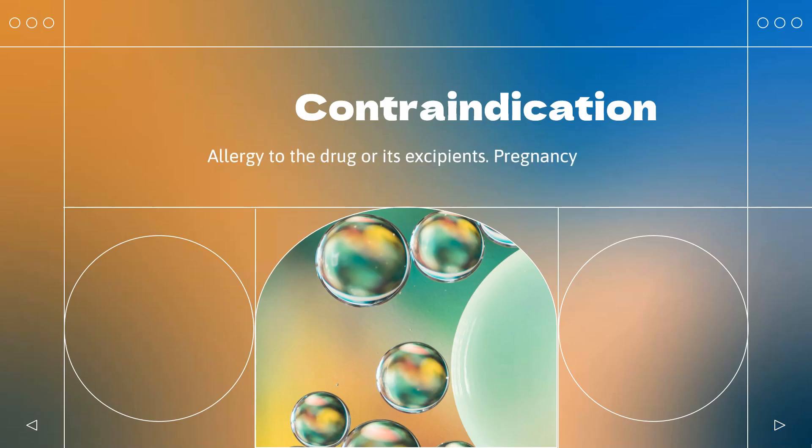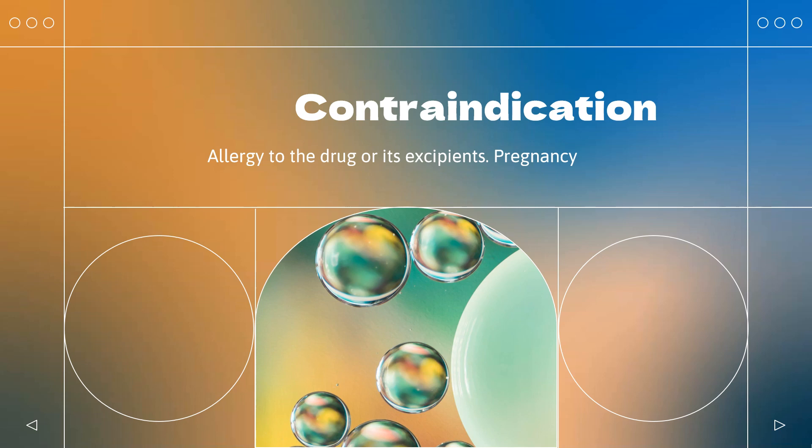Contraindications: Allergy to the drug or its excipients. Pregnancy — reported to cause spontaneous abortion, craniofacial malformations, and cardiac malformations. Women must use effective contraception starting 4 weeks before commencement, throughout treatment, and for 6 weeks after the last dose.